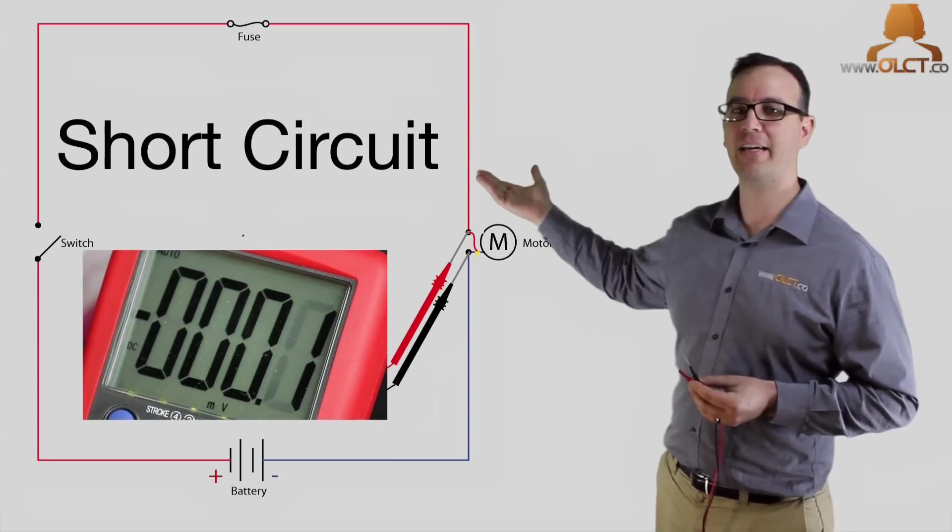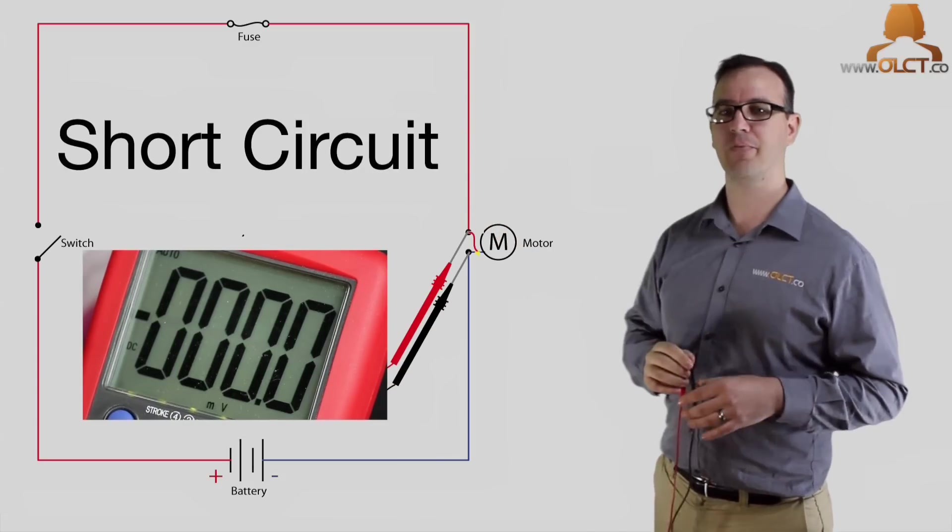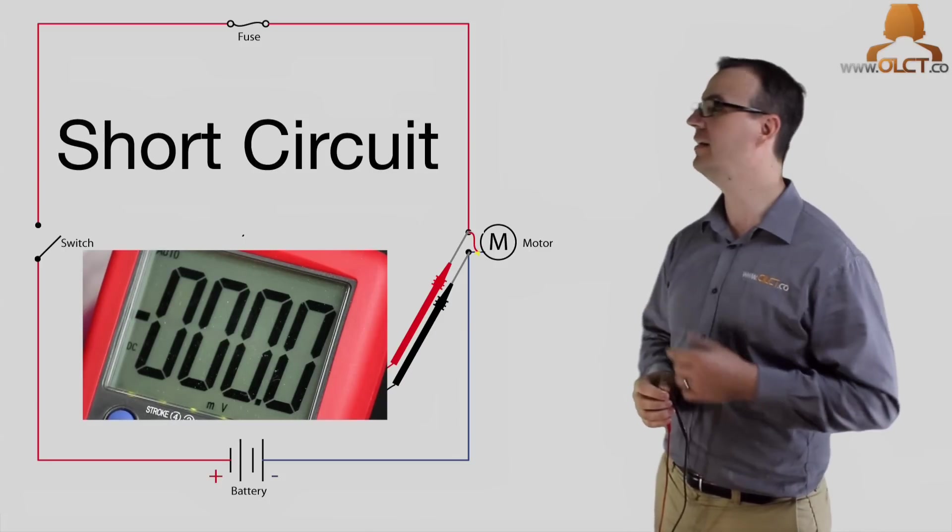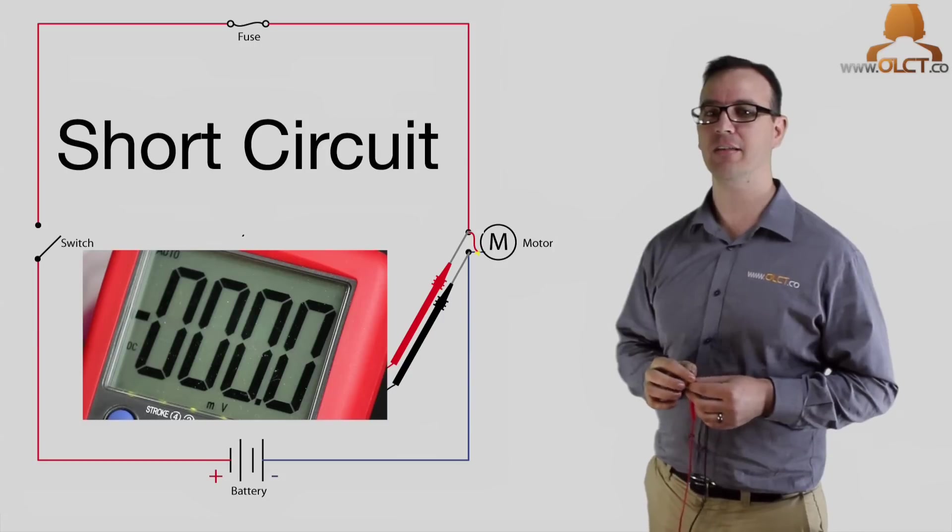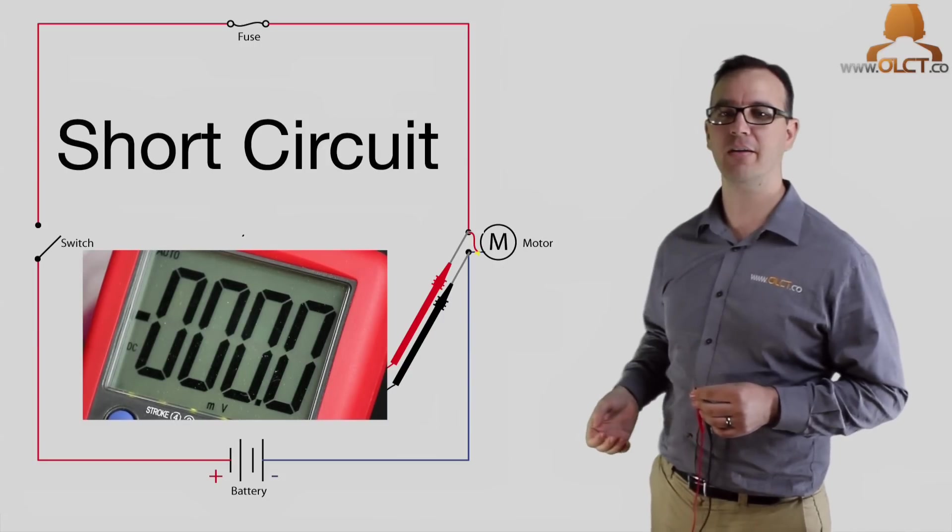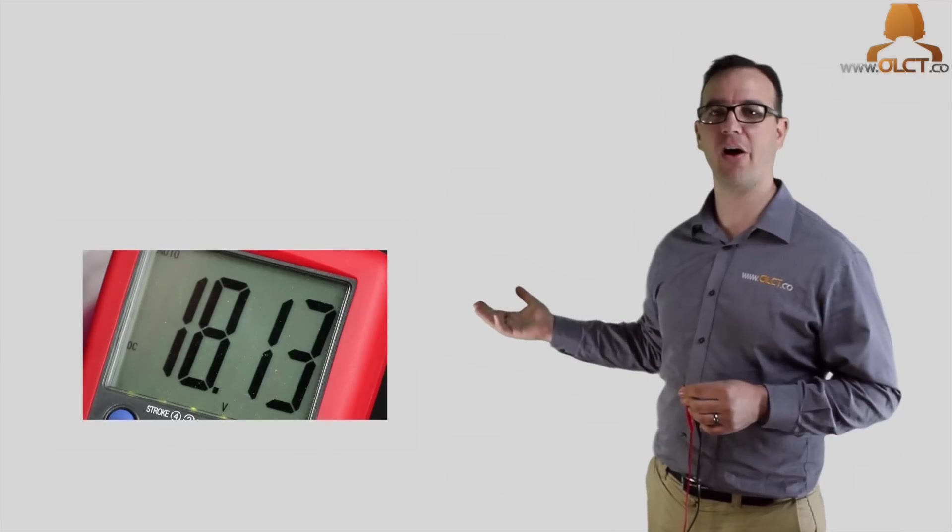A short circuit will be displayed as zero volts. The multimeter reads zero volts, telling you that something wire is touching something steel. If we see this reading during a test, it means that we have a short to ground. Remember, we're reading voltage here, not ohms.